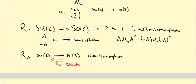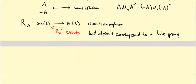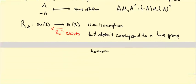But R*⁻¹ does not correspond to a Lie group homomorphism. This is fine: Lie's theorem only tells us a Lie algebra homomorphism lifts to a Lie group homomorphism if the domain group is simply connected. Here the domain of R*⁻¹ is so(3), whose corresponding group SO(3) is not simply connected, so this doesn't contradict Lie's theorem.